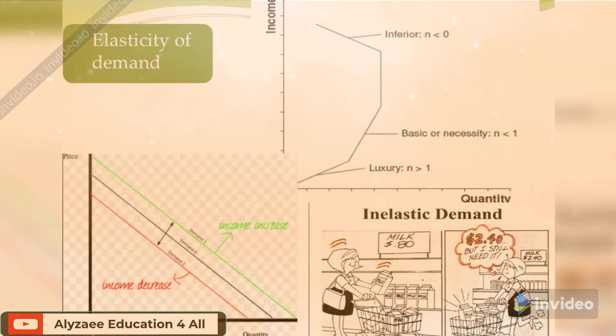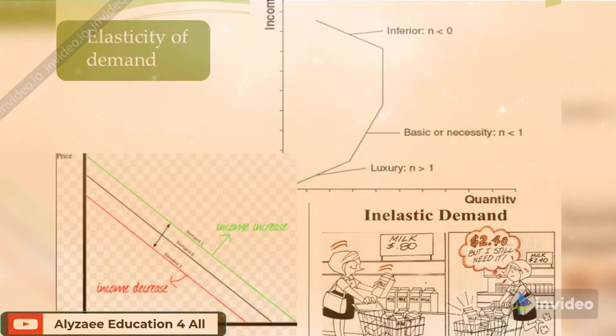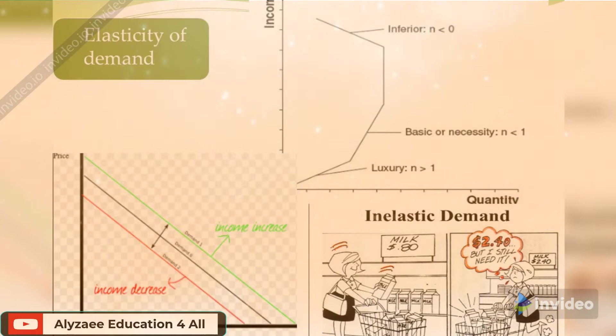So when income increases, the whole price line shifts and it moves up, and it has been shown here in green color. If the income decreases, the whole price line shifts down which is shown here in red color.